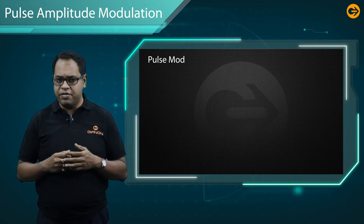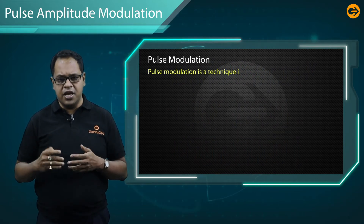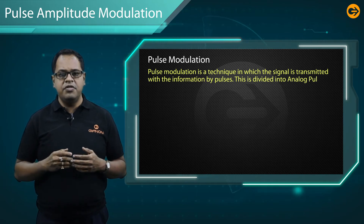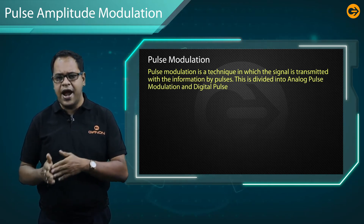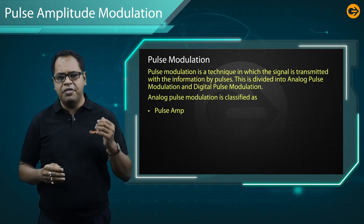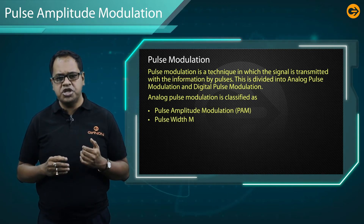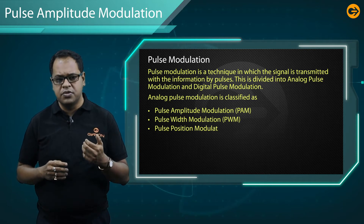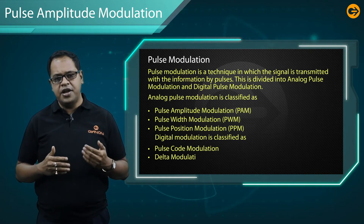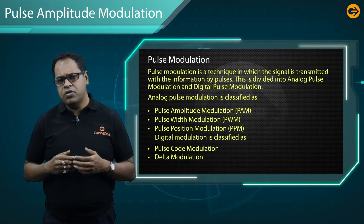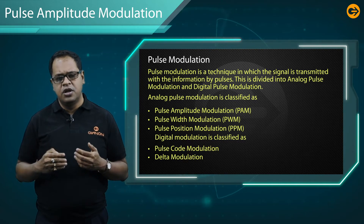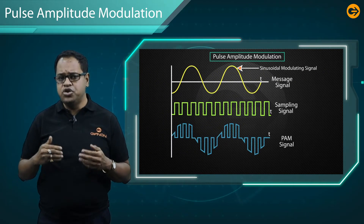Pulse Modulation is a technique in which a signal is transmitted with information by pulses. This is divided into Analog Pulse Modulation and Digital Pulse Modulation. Analog Pulse Modulation can be further classified as Pulse Amplitude Modulation, Pulse Width Modulation, and Pulse Position Modulation. Digital Modulation is classified as Pulse Code Modulation or PCM and Delta Modulation (DM). Delta Modulation can be further improved to Adaptive Delta Modulation.